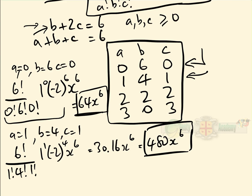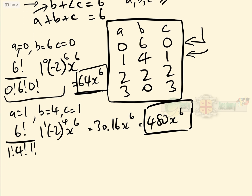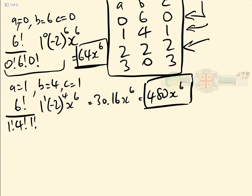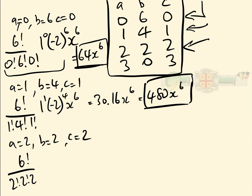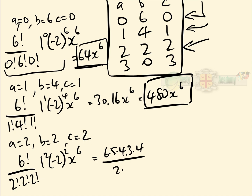For a equals 2, b equals 2, c equals 2: substituting gives 6 factorial over 2 factorial times 2 factorial times 2 factorial, times 1 squared, times (minus 2) squared, times x to the 6. That equals 6 times 5 times 4 times 3 times 4 over 2 times 2, which equals 360x to the 6.